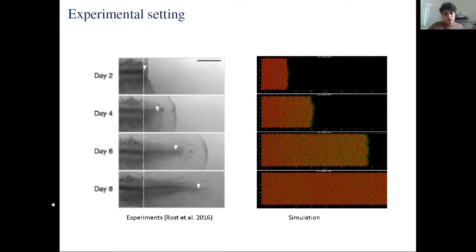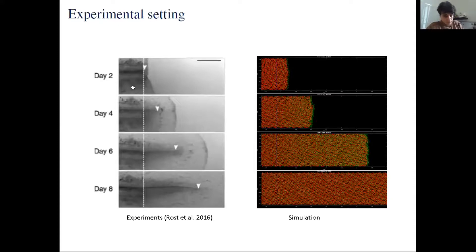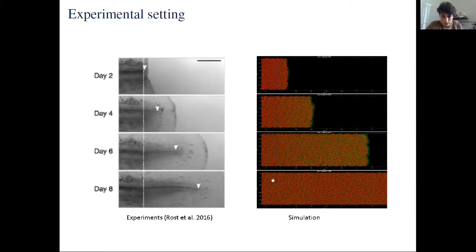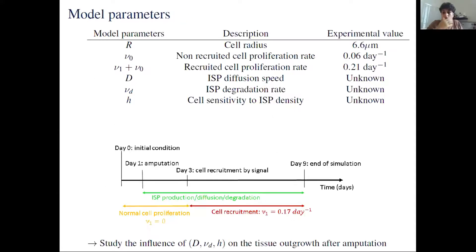Let me show a typical simulation. On the left are experimental images from the Rost et al. 2016 eLife paper — screenshots of axolotl tail at days two, four, six, and eight after amputation, with the amputation plane shown as a dashed line. On the right is a typical simulation of our model at the same dates, with the amputation plane shown in blue. Before going into the simulations, let me discuss the model parameters.